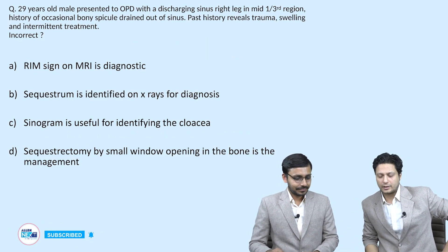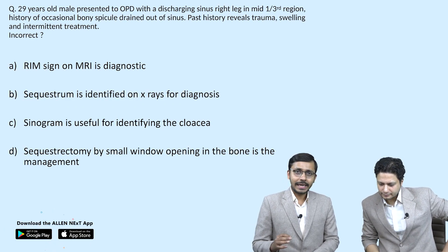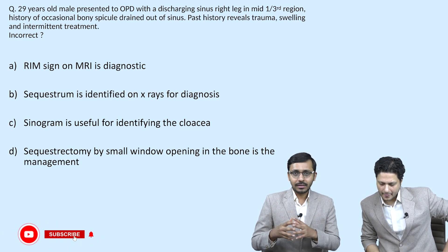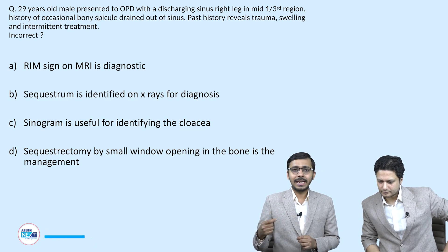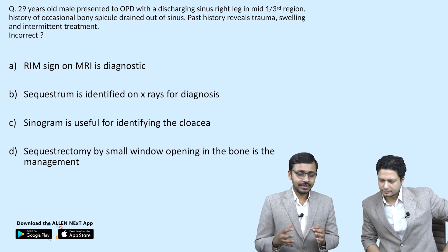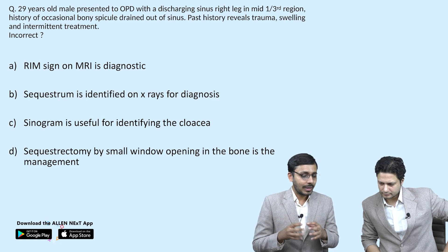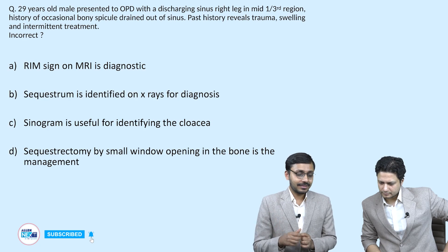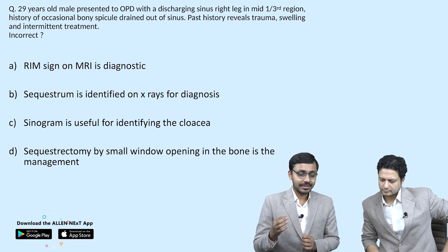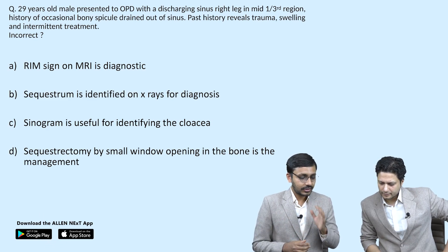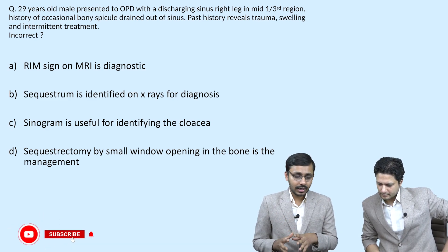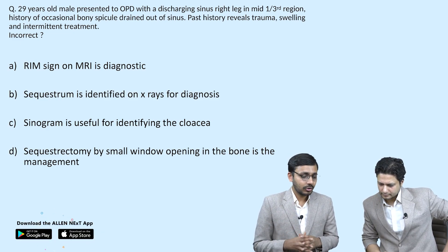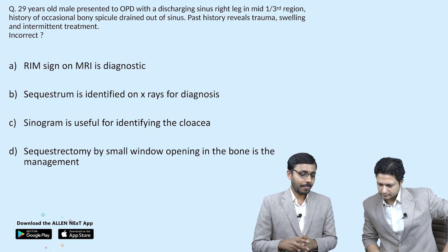The first question: a 29-year-old male presented to the OPD with a discharging sinus in the right leg, mid-third region, with history of occasional bony spicules draining out of the sinus. Past history reveals trauma, swelling, and intermittent treatment. Which is the incorrect option? Options: A) Rim sign on MRI is diagnostic; B) Sequestrum is identified on x-ray for diagnosis; C) Sinogram is useful for identifying the cloaca; D) Sequestrectomy by small window opening in the bone is the management of choice.